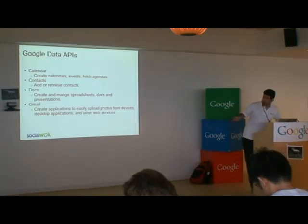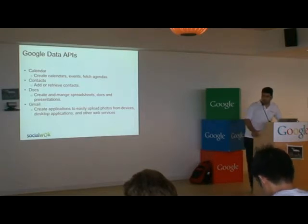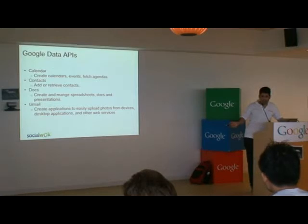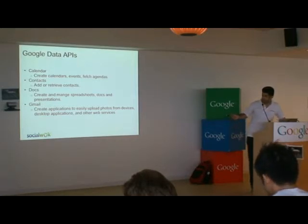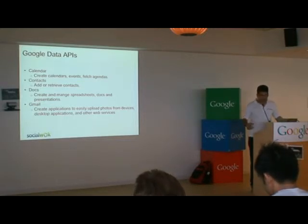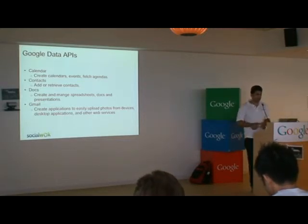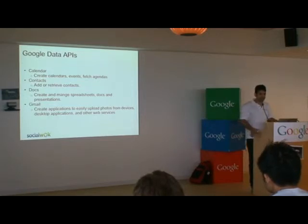One of the most popular ones is the Calendar API, which is used quite a bit even by other Google applications. Then there's Contacts, which I would say is the least developed of the APIs but still pretty useful. There's also Docs, which lets you create docs, share them, set parameters and permissions.